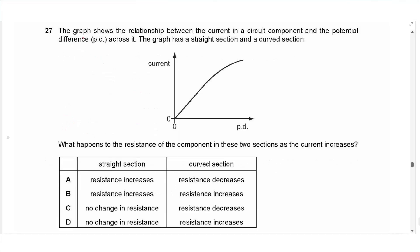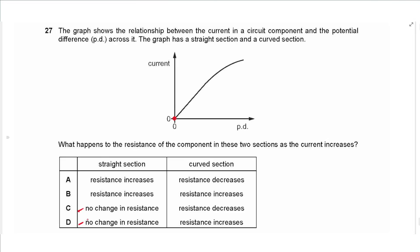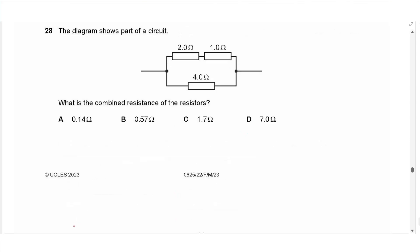Question 27: the I-V graph of a component has a straight section and a curved section. In the straight section the graph passes through the origin as a straight line, so resistance is constant. In the curved section the graph inclines towards the potential difference axis, meaning more energy is needed for each unit of current — resistance increases. The answer is D.